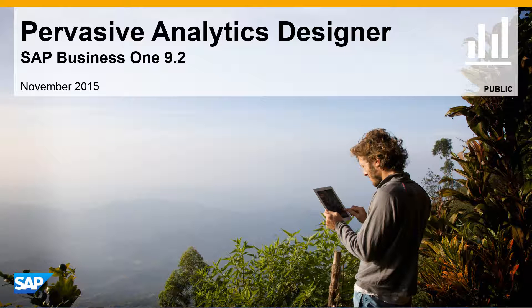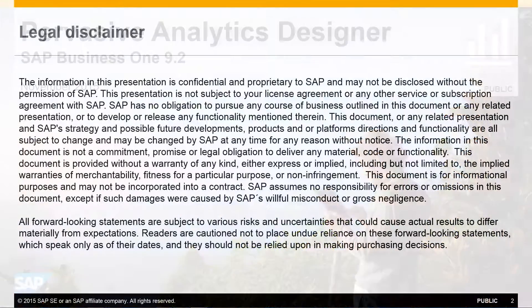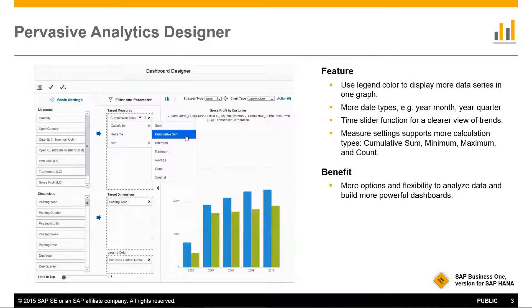Welcome to our feature clip highlighting the enhancements to the Pervasive Analytics Designer in SAP Business One Release 9.2. A number of improvements have been implemented to give users more flexibility to analyse data and build more powerful dashboards. You can use legend colour to split data by an additional dimension, displayed in different colours within a graphic.